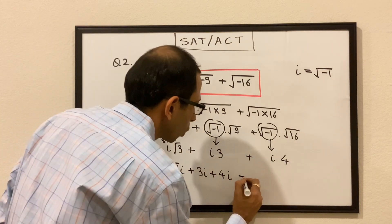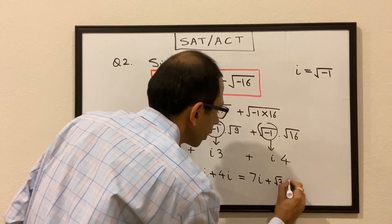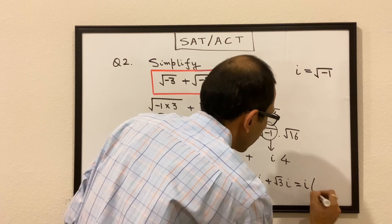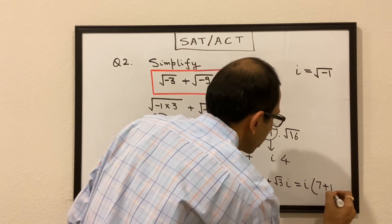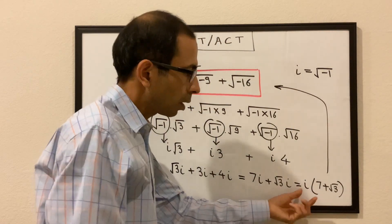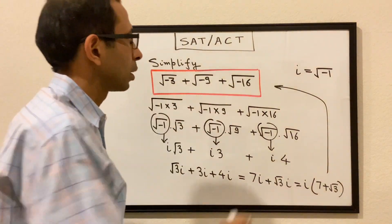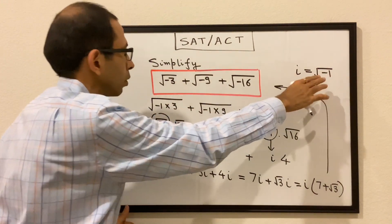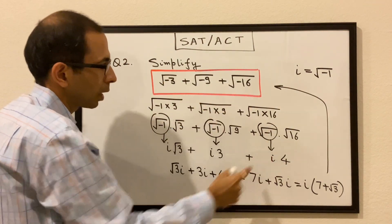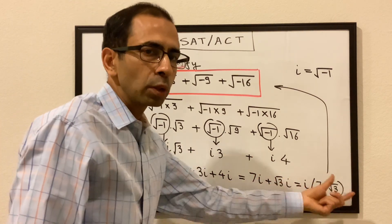So we get i√3 + 3i + 4i, which equals 7i + i√3. Taking i as common, the answer is i(7 + √3). Pretty straightforward — we use the definition of i to rewrite each square root of a negative number.